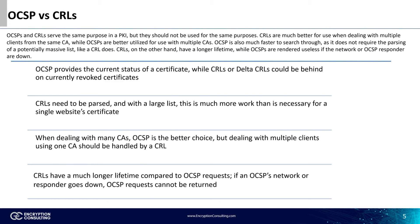One issue with CRLs is that they need to be parsed because there's such a large list, and this can cause a lot of unnecessary work when searching for a single website certificate. To find a certificate from a CA's CRL, the whole list must be parsed, which is okay for multiple clients, but with one website, this is overkill.